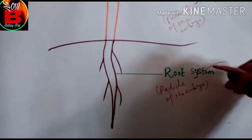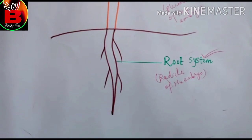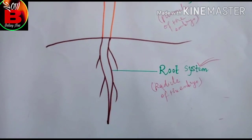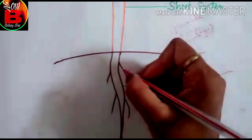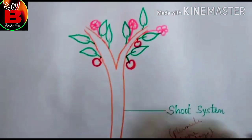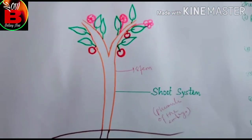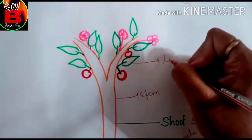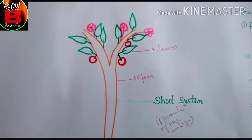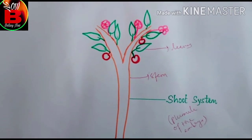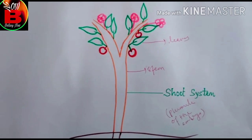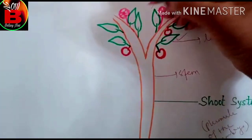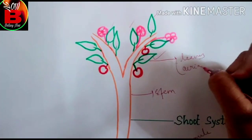Normally we find the root system as an underground part, but there are some roots which grow above the ground. Moving on, the stem part is developed from the plumule of the embryo. Attached to the stem, the leaves are present. These leaves help in photosynthesis because of the presence of chlorophyll pigment in the leaves for performing the photosynthetic process.